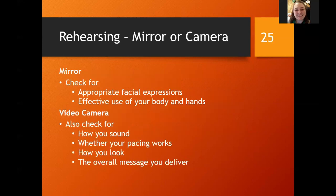Mirror or camera: when looking at it visually, look for your facial expressions and effective use of your body and hands. Body gestures need to be large — if you're up on a stage with people in the back of the audience, you don't want to make small movements. With a video camera, assess how you sound, how your pacing is, how your look comes across, and how well the overall message is delivered.